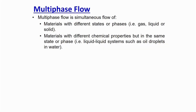Formally, multiphase flow is the simultaneous flow of two different materials present in different states. It can be the same material in different phases, or two different materials in different states. When I say different states, I mean gas, liquid, or solids. For example, water and air flowing together — two different states — is called multiphase flow.